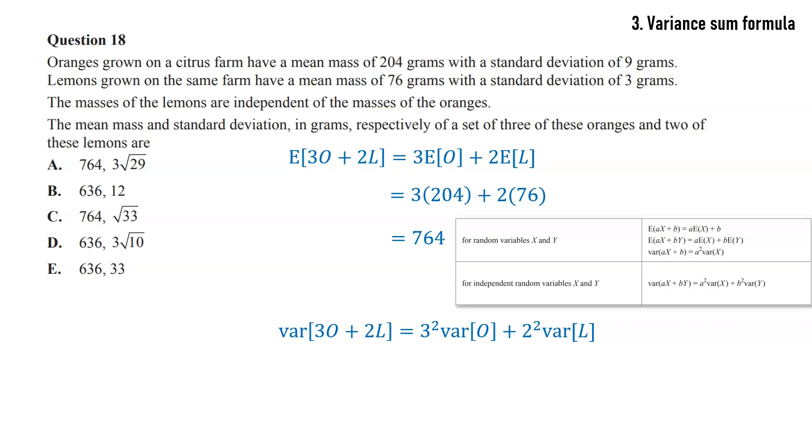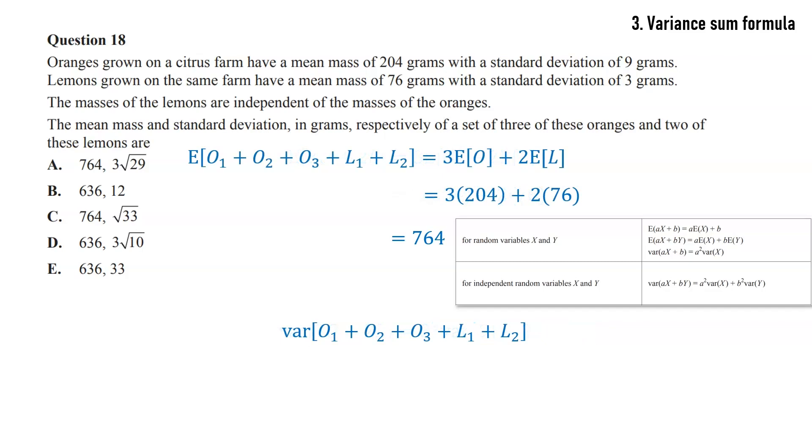That would be if we had selected one orange and multiplied the mass by 3. And same for the lemons, but that's not what we've done. We've actually selected three different oranges and two different lemons. So it's a different situation and the variance is going to be different. So what we're actually going to have here is the sum of five different variances. Now, three of those variances are the same. So it's three times the variance of an orange plus two times the variance of a lemon. So it's a subtle difference. But the key thing is, are we selecting one object and multiplying it by a scalar or are we selecting several different objects? That's what we're doing here. So feel free to watch that again if you wish, but otherwise, let's move on.